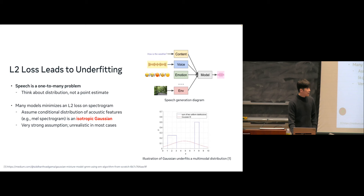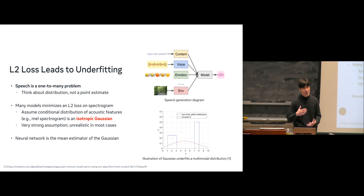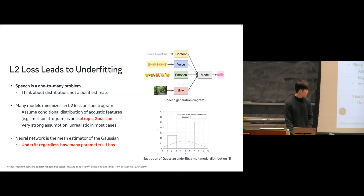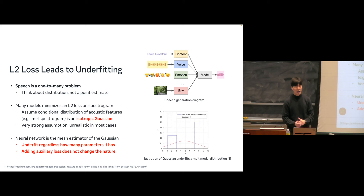This is a very strong and unrealistic assumption, especially when there's more unspecified variation between input and output. Scaling the number of layers or parameters doesn't solve the problem, because the neural network is just an estimator of the mean — you still impose the same Gaussian assumption. You can estimate the mean more precisely, but you're still not modeling a distribution. You can add an adversarial GAN loss to shift prediction toward one mode, but it will still only cover one mode, not both.